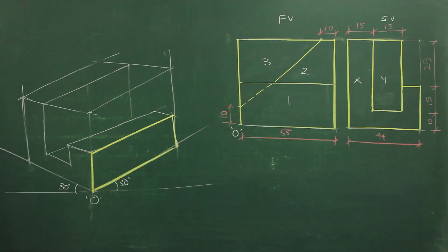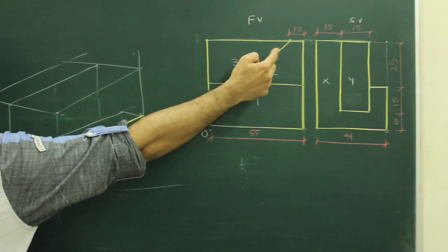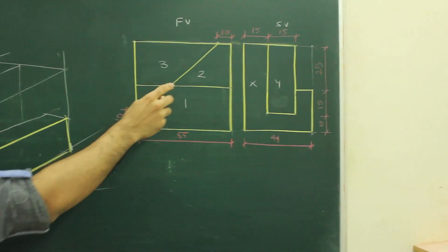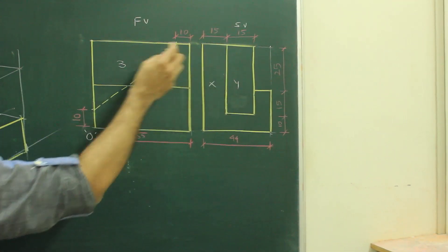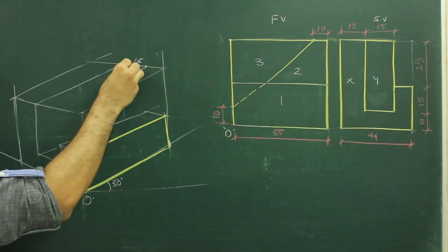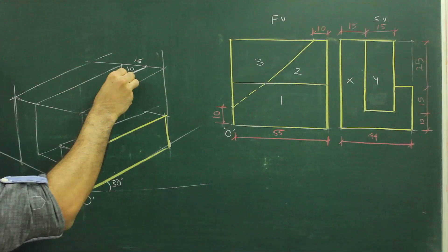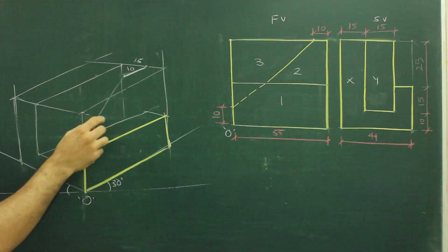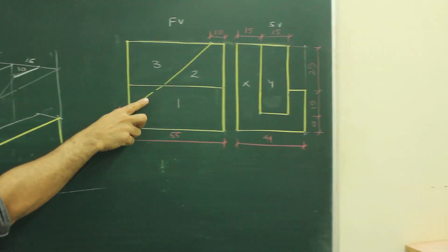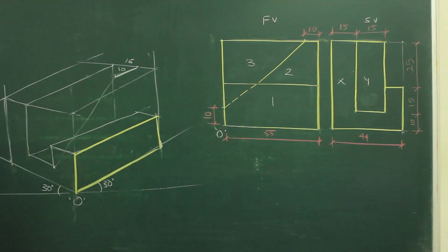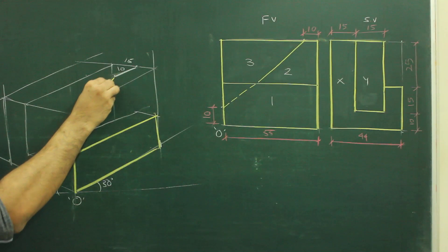Now I need to draw part two. So if I want to draw part two, they have given 10. So I can take 10 from here. But if you see the side view, you will realize that part two has a width which is 15. So what we need to do from here, again I have to come ahead by 15, and then I have to take 10. And here I need to join this slope. In front view, you can see this slope — that is what I have drawn over here. So I need to join from here to here. So this will be your part two.